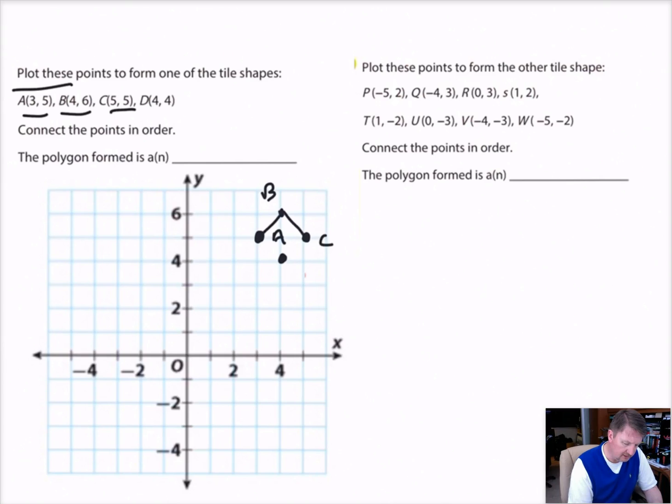And then connect them in order. So A, B, C, D, and then we come back to A. And then it says what shape was made. It looks like it's a square, actually, kind of laid on its side. So we have a square.